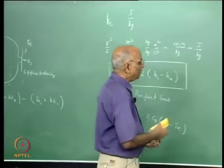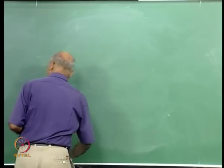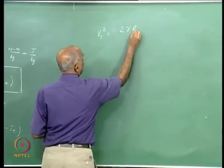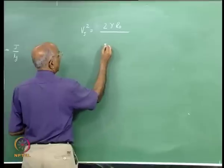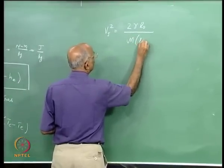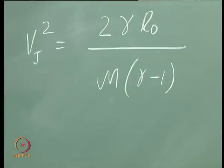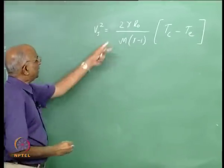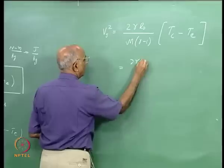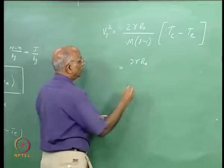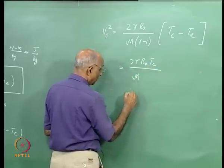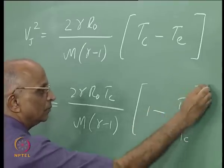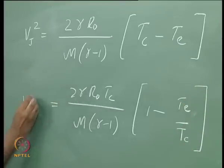Substituting the full expression, V_j² = 2γR₀T_c / [M·(γ − 1)] · (1 − T_e/T_c), where the units work out to meter² per second². This gives the square of the efflux velocity.